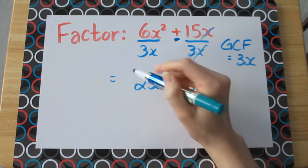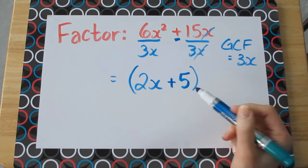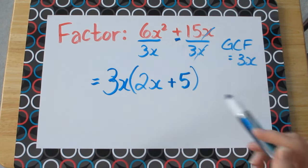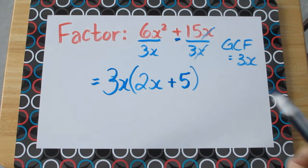So remember to finish this off we need to include that 3x outside the bracket, and that is our final product, 3x multiplied by 2x plus 5.